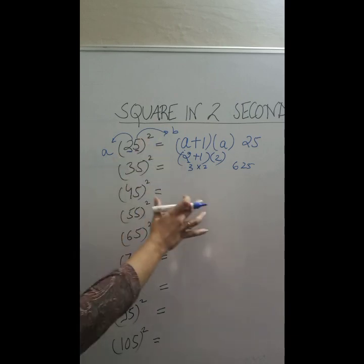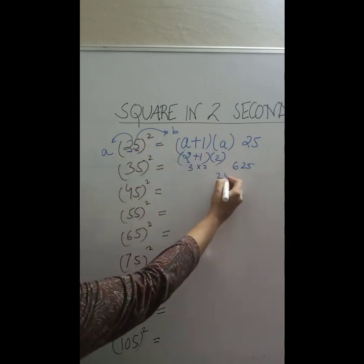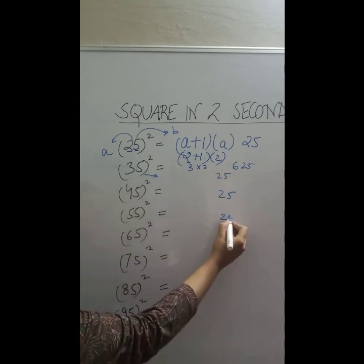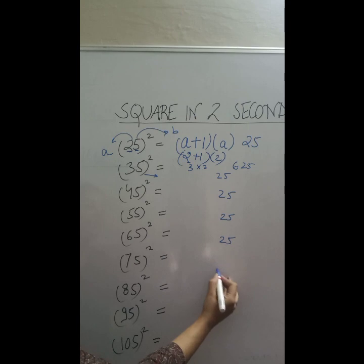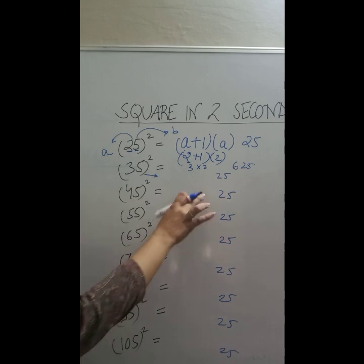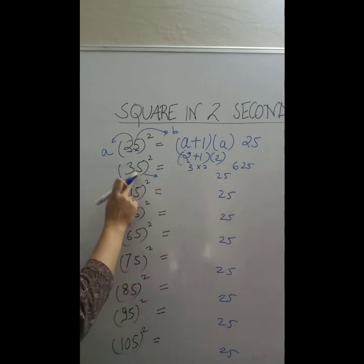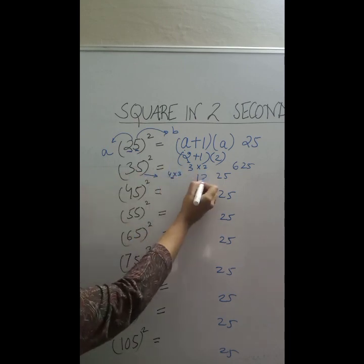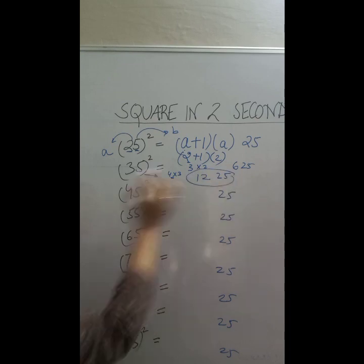What you do is you write 25 at the end of each number. Now suppose for this, write here 25, 25, 25, 25, 25, 25, and 25. Now for the rest we are going to follow this similarly. 35, a plus 1, that is 3 plus 1 is 4, 4 into 3 which will be 12. So 35 square is going to be 1225.